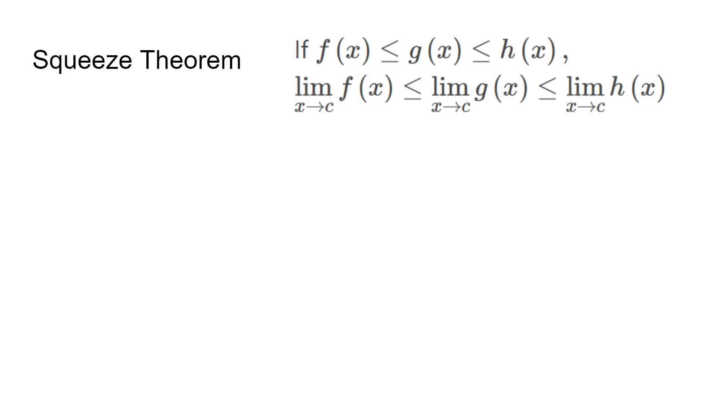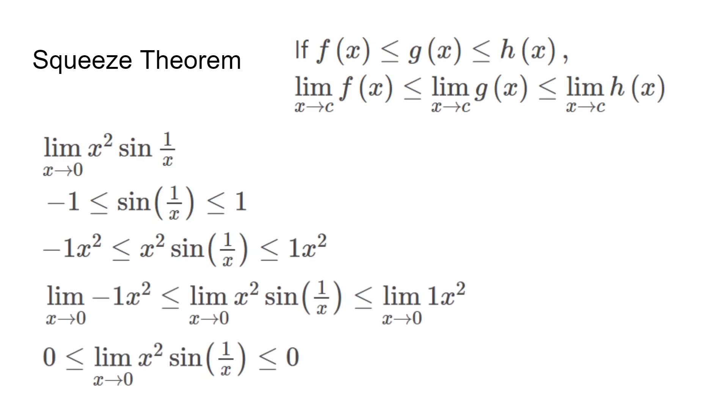It states if f(x) is less than or equal to g(x) is less than or equal to h(x), the same also applies to their limits. When given a sin limit, we know that the value of sin is only bounded by negative 1 to 1, so we can set them in an equation. We can multiply all three parts by the outside value as well, and at the end we just take the limit of all three. We end up with the answer of zero.